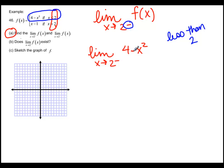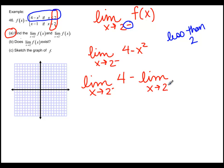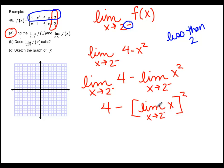Now that we're just looking at 4 minus x squared, we can use our limit laws as we have been doing for regular limits. Using the difference rule: the limit as x goes to 2 from the left of 4, minus the limit as x goes to 2 from the left of x squared. The limit of the constant 4 is just 4, and for x squared we bring the limit inside to get the limit as x goes to 2 from the left of x, squared. That gives us 4 minus 2 squared, or 4 minus 4, which equals 0.